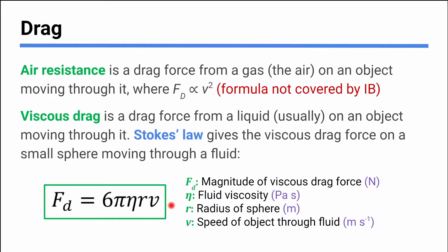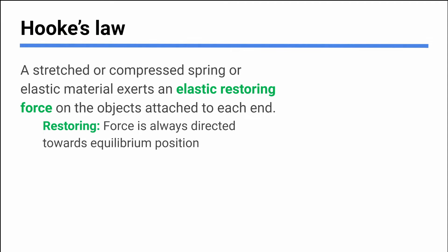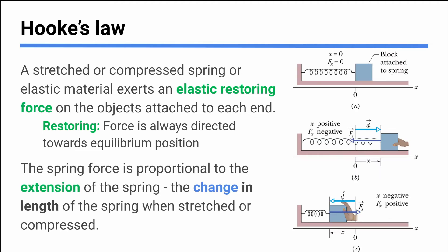So that's an equation to figure out how big the drag force is when you drop a marble through a beaker of water or some fun thing like that. The last equation is called Hooke's Law, and this is about spring force. If you have a spring or any elastic material — really rubber bands, things like this — we have what's called an elastic restoring force that pushes or pulls on the object attached. Restoring means there's some equilibrium position that the force is always trying to get back to.